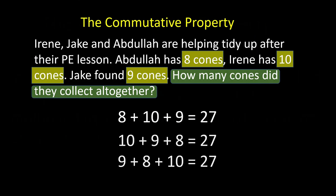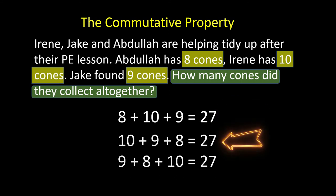Have a look at this word problem. Irene, Jake, and Abdulla are helping tidy up after their PE lesson. Abdulla has eight cones, Irene has ten cones, and Jake found nine cones. How many cones did they collect altogether? Well, the commutative property says you can write the addends in the order they appear in the question: 8 plus 10 plus 9 will equal 27.